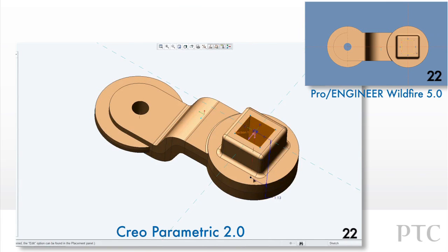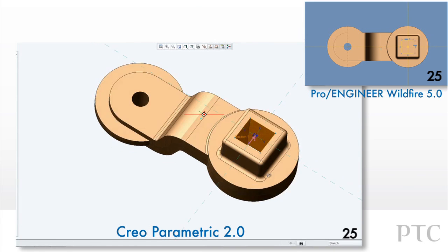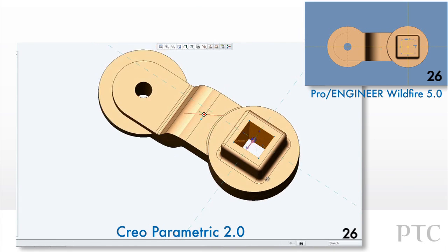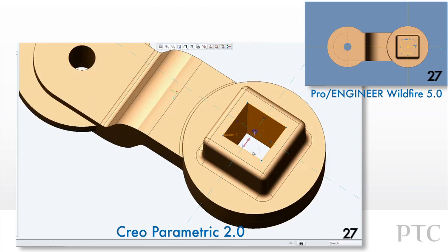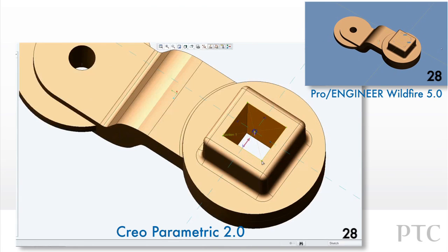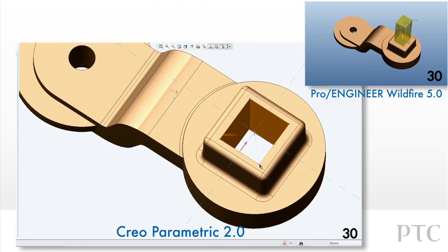When creating features, you can also automatically add or remove material depending on which direction you pull the shape. You don't have to navigate to the dashboard or use the right mouse button to change the feature.